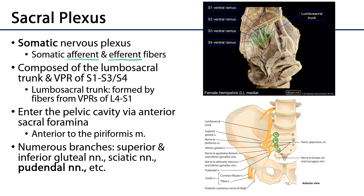Those ventral primary rami of the sacral nerves are going to travel through the anterior sacral foramina. Just anterior to those ventral primary rami, between the sacrum and those nerves, we're going to have the piriformis muscle, moving out towards the greater trochanter of the femur. We can see the piriformis muscle just posterior to these ventral primary rami on its way out of the pelvis.